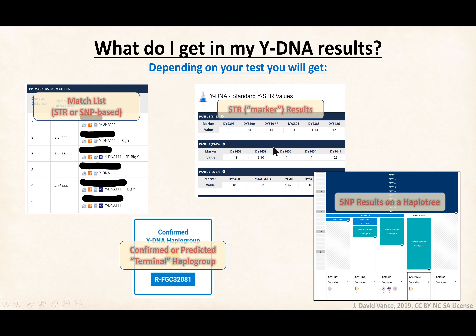You'll get a lot of raw data, both STR and SNP-based, depending on what test you took. The raw data doesn't do you a whole lot of good until you start comparing yourself against other people. Even SNPs will tell you your haplogroup and branch, but from a genealogical standpoint you don't get a lot of value until you understand how that helps you match against other people. If you do have SNP results, they'll place you on a haplotree showing where you fall in relation to other men.